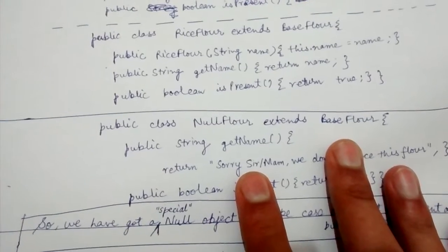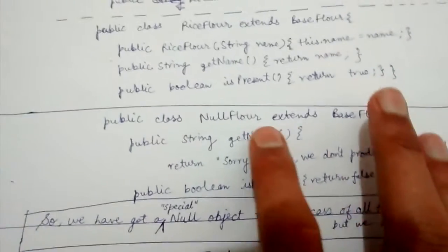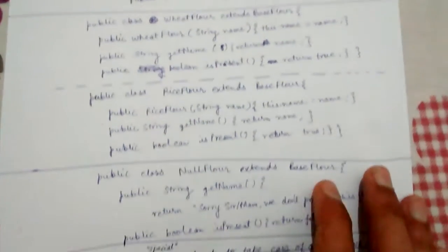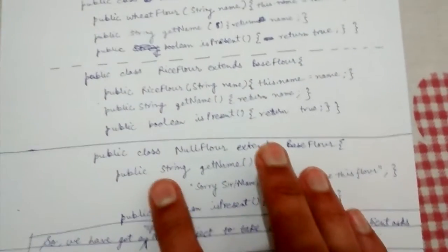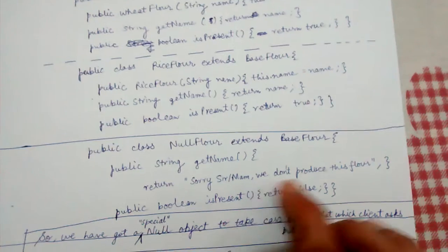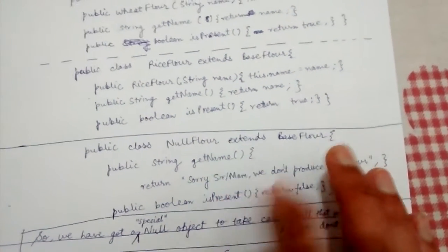Now let's look at the third special class which is at the heart of the Null Object design pattern, called NullFlour. It also extends the BaseFlour class. It has a getName method which returns 'Sorry sir or ma'am, we don't produce this flour.'